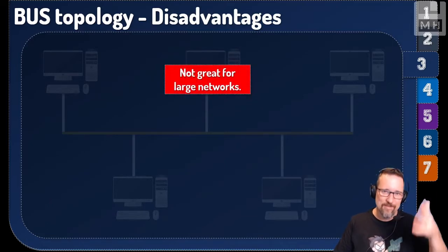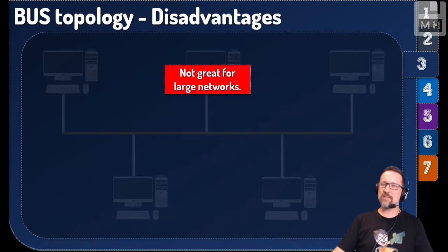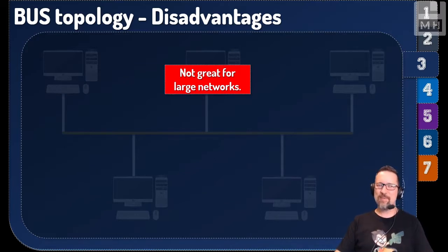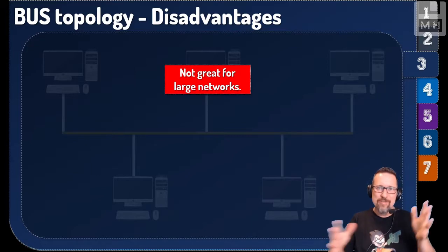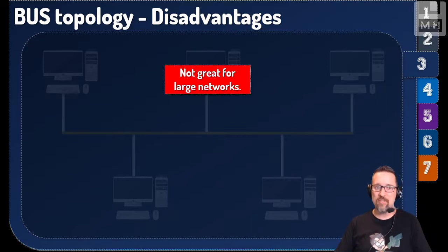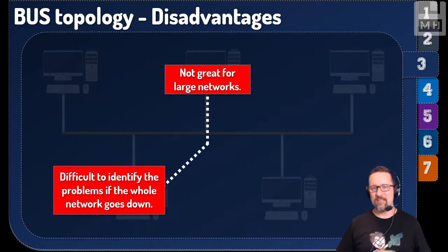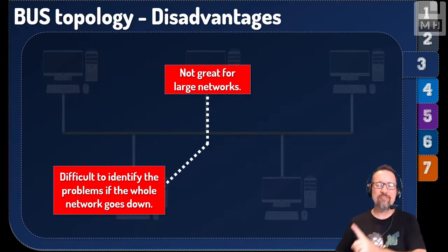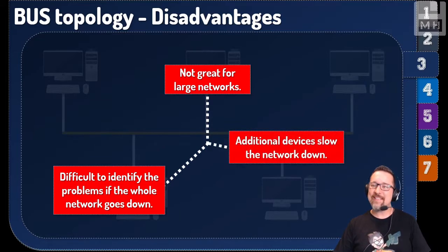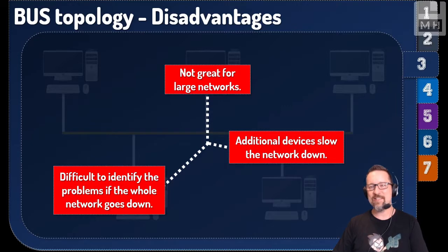Some disadvantages of bus topology: it's not great for large networks — other topologies are better for that. It is difficult to identify problems if the whole network goes down, because you may not be able to pinpoint where the fault is along the path. Adding additional devices also starts to slow the network down.